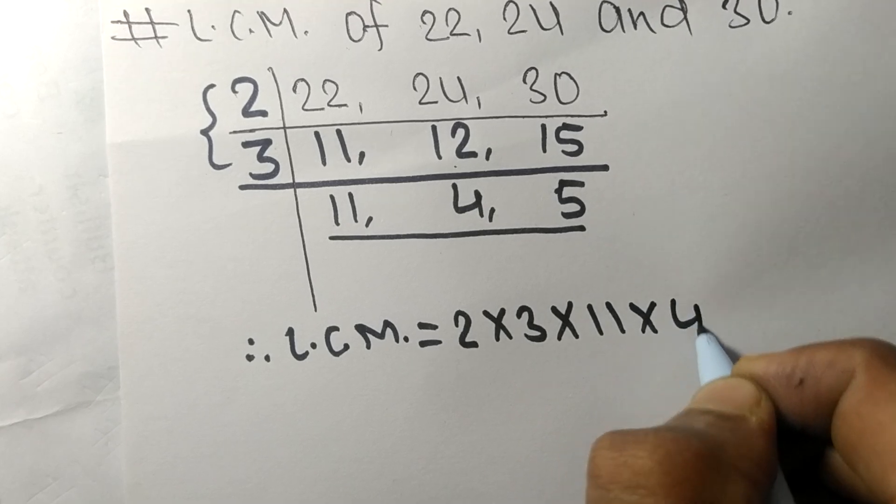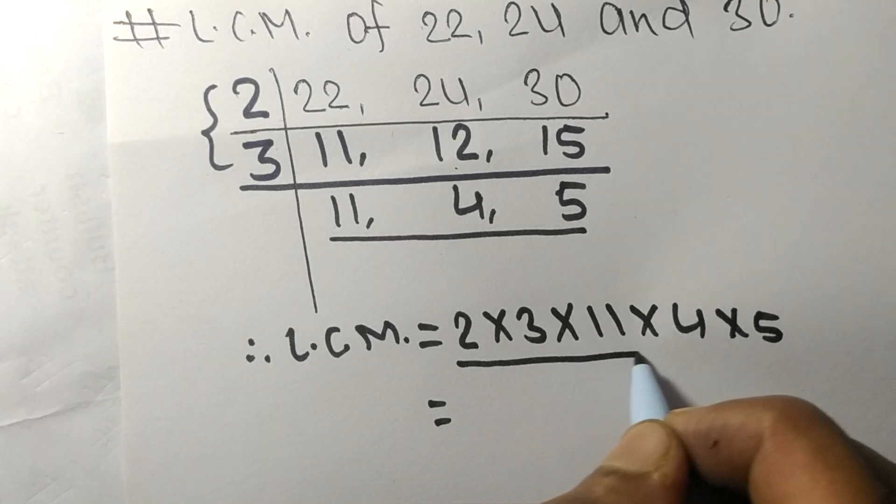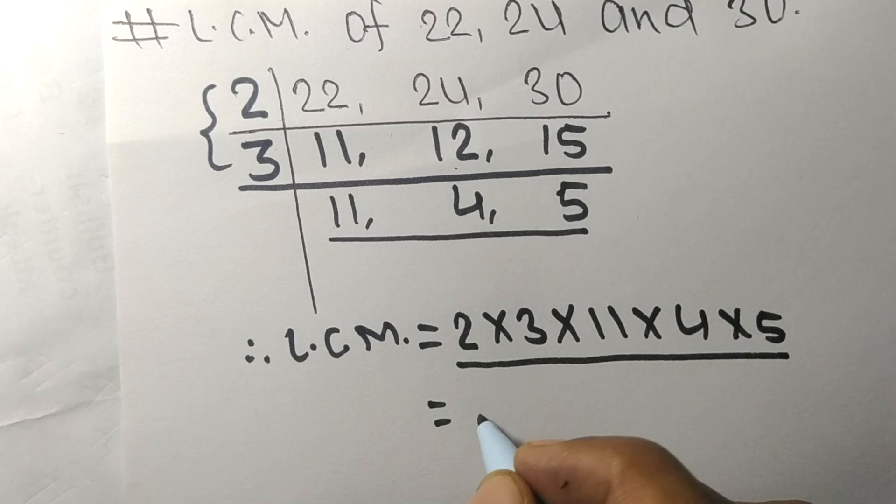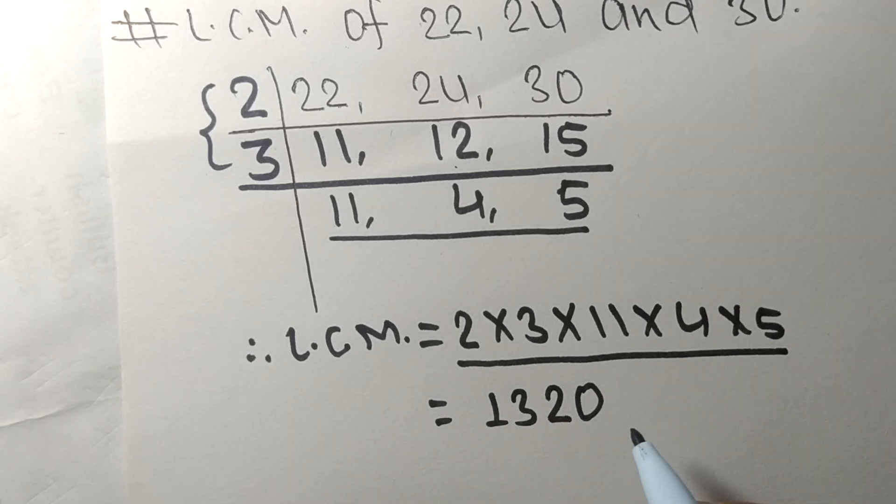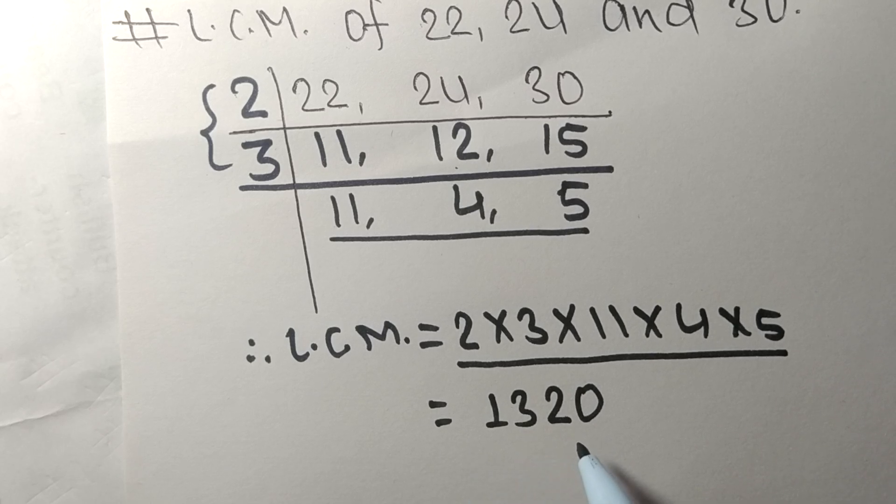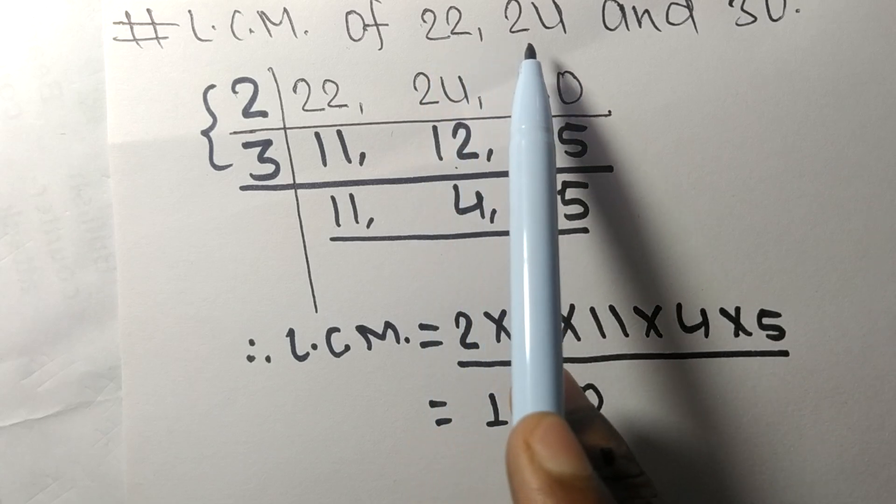By multiplying all these numbers we get 1320. So 1320 is the LCM of 22, 24, and 30.